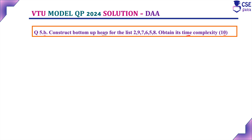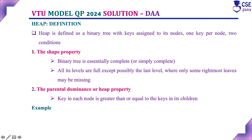Here you need to explain what do you mean by heap, then construct the bottom-up heap for the given list, and then assign the time complexity. So first, what do you mean by heap? Heap is defined as a binary tree — a binary tree can have at most 2 children, that is 0, 1, or at most 2 children. This heap is a binary tree with keys assigned to its nodes, one key per node, with two conditions: the shape property and the parental dominance property.